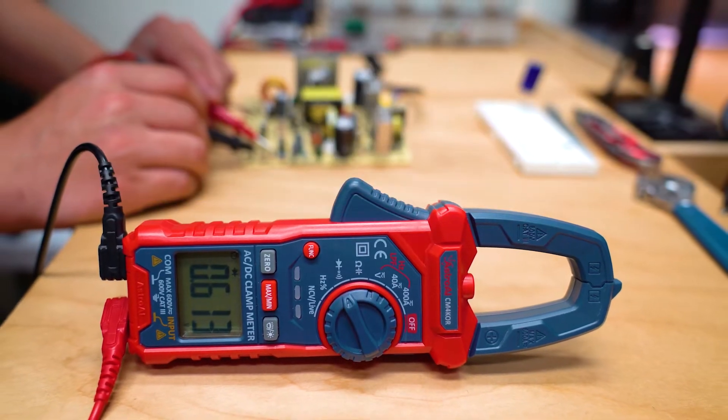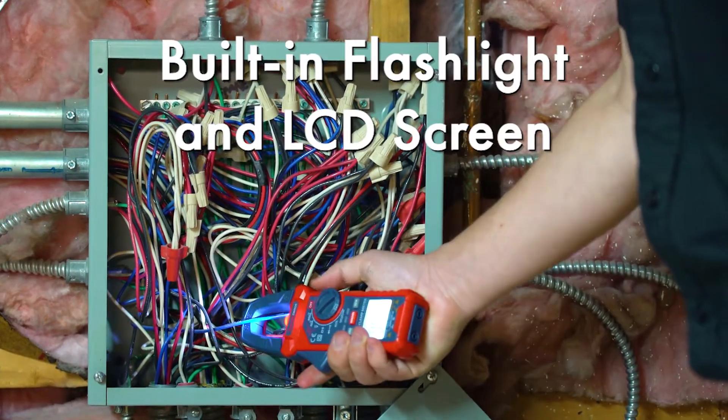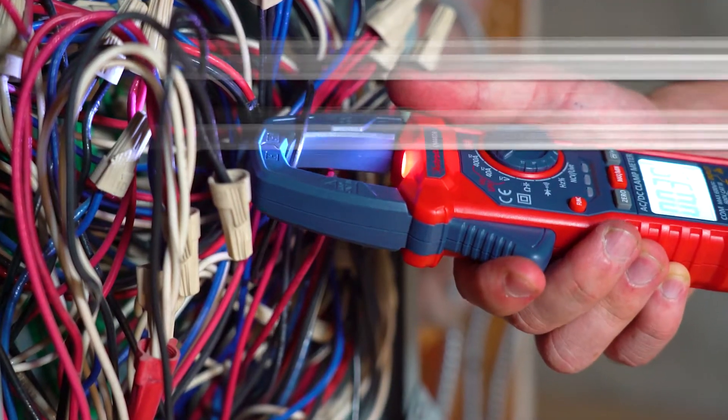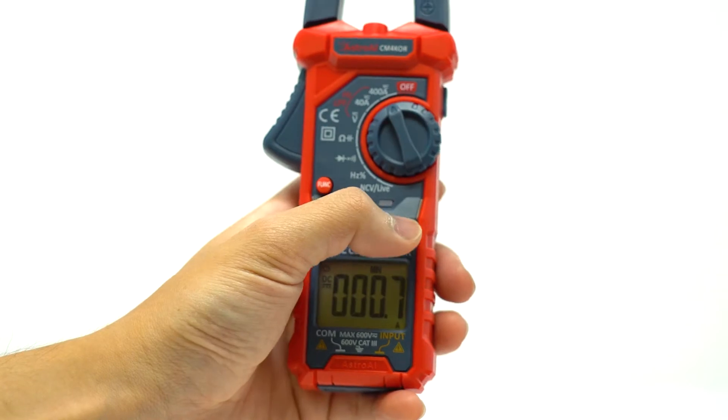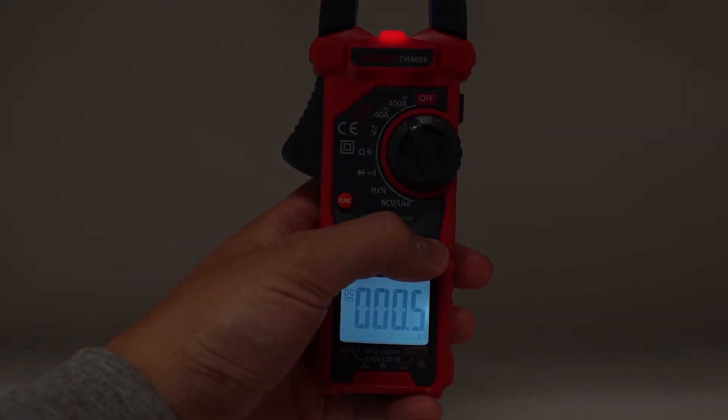It has a backlit LCD screen plus a built-in flashlight for any projects in low-light settings. Simply press the light button once for the LCD screen and press and hold to turn on the flashlight.